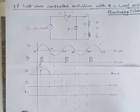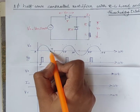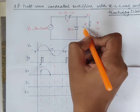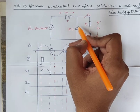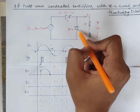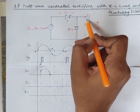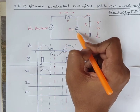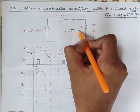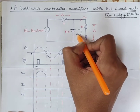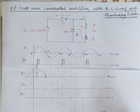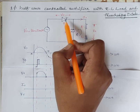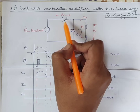So this is V0. After omega t equal to pi, the negative terminal is here and positive here, so the freewheeling diode is forward biased. As a result, the I0 current is immediately transferred from the SCR to the freewheeling diode, so now I0 current flows through the freewheeling diode. Therefore, the current through the SCR is zero and the SCR is reverse biased.